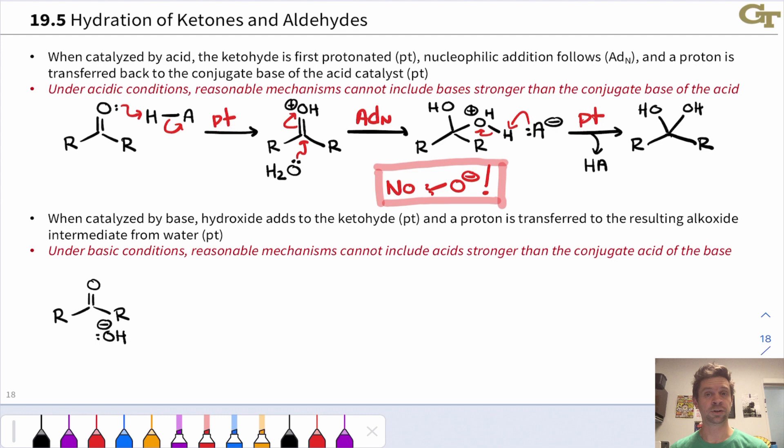This is very typical of acid catalysis, this dance of put a proton on, something happens, the proton falls off. Over and over and over again, the catalytic cycle repeats. And throughout this mechanism, notice there are no negative charges. Well, okay, there's one negative charge, the conjugate base of the acid, A minus.